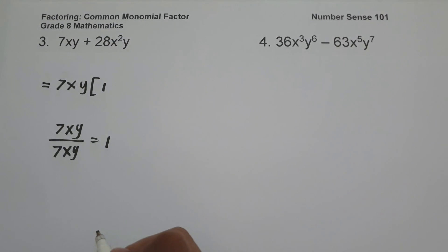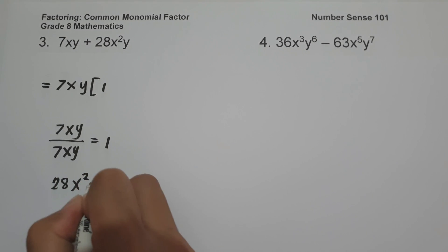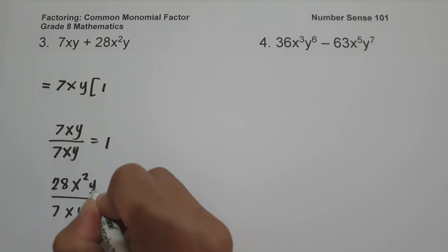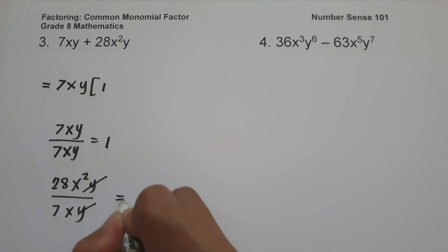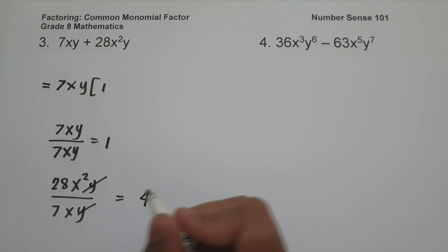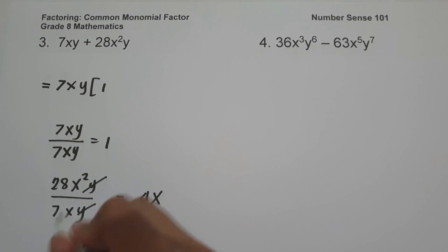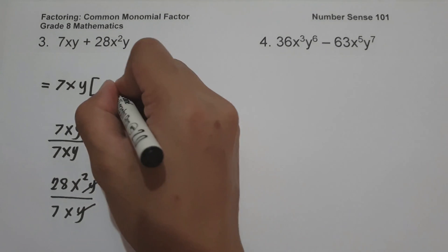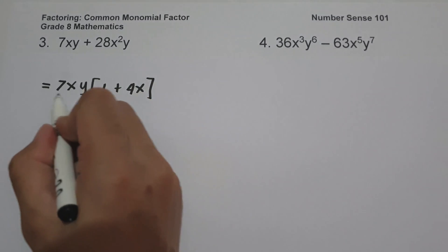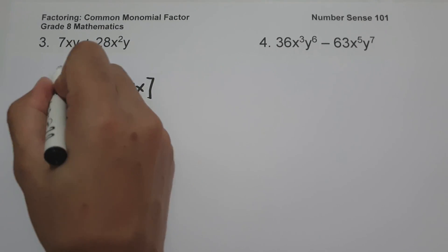Then let us have 28x²y divided by 7xy. We can cancel the variable y, and 28 divided by 7 is 4. Then x² divided by x — we simply subtract their exponents — is x. So we get 4x. We are going to have 7xy times the quantity of 1 plus 4x, and this will be our answer.